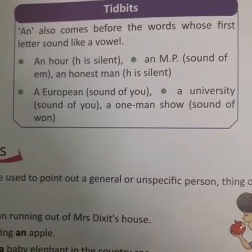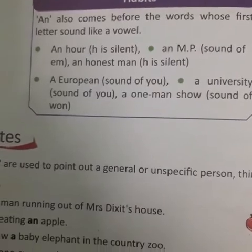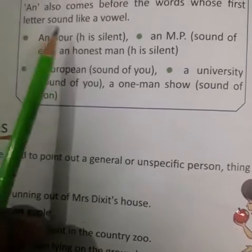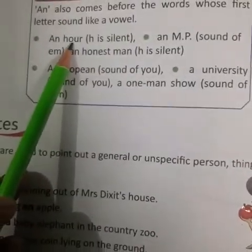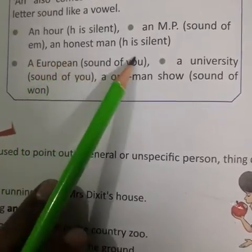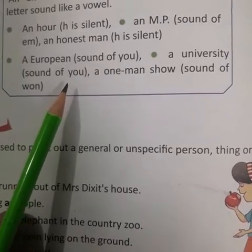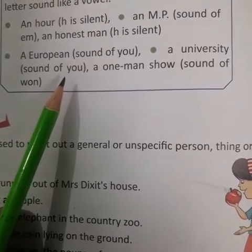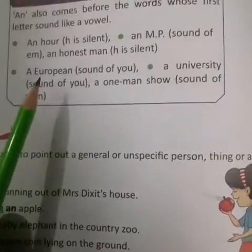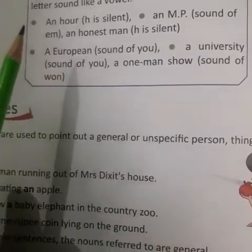'An' also comes before words whose first letter sounds like a vowel. 'An' us ke saath bhi use kiya jaata hai jiske first letter ka sound vowel ka ho. Like: an RH — H is silent here but the sound is of a vowel. An MP — sound of M. An honest man — H is again silent. A European — sound of U. A university — sound of U. A one man show — sound of W (one). So jahan vowel sound aata hai wahan 'an' ka use karenge.